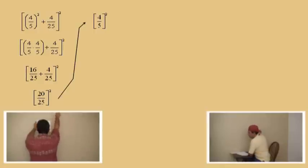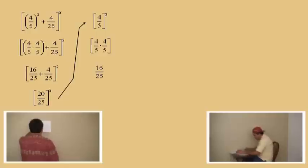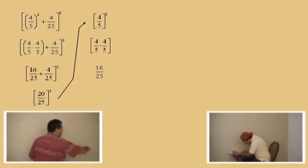So 4 fifths squared. What does 4 fifths squared mean? 4 fifths times 4 fifths. Multiply straight across the top and straight across the bottom. What do we get? 16 over 25. Don't forget to circle your answer. That completes that problem.